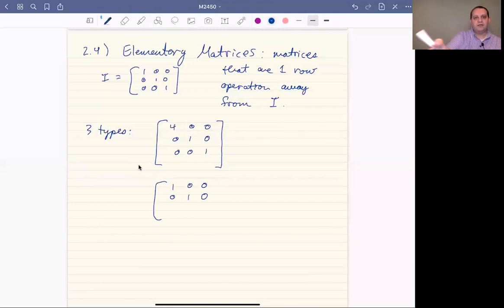if you were to add three times row two, so you multiply row two by three, add it to row three, you're going to end up with zero, three, one. Okay, so that's another thing that you could do there.